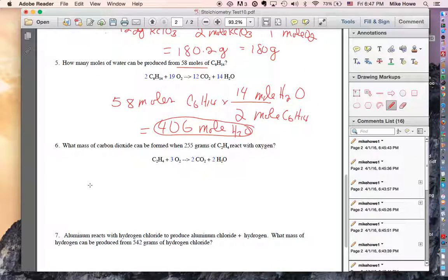Alright, number six. You're given grams. You want to find mass. So this is going to be a three-stepper. So 255 grams of C2H4. You're going to put grams of C2H4 on the bottom. How do I know that? Because they're right here. Put moles of C2H4 on top. Then one mole. One always goes to moles except in the mole ratio. And the number of grams of C2H4 would be 12 times 2 is 24 plus 4 is 28.